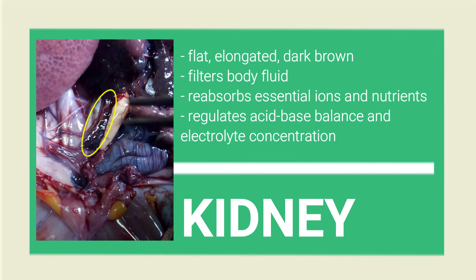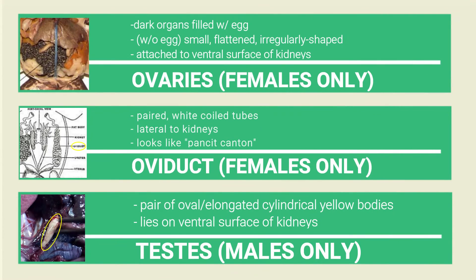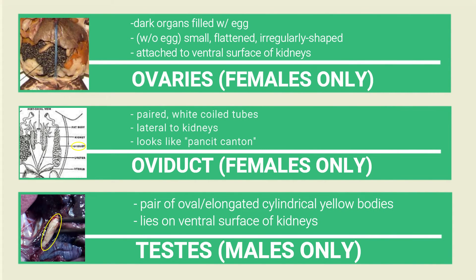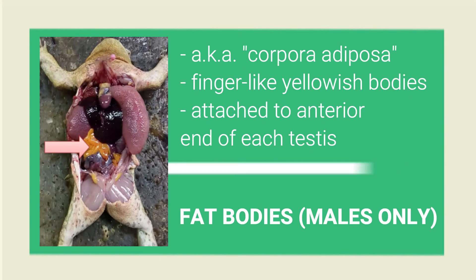They also have kidneys, which filter out impurities in the body. Then they also have the gonads — the ovaries for reproduction in females and the testes for males. They also have the oviduct and fat bodies that store energy.